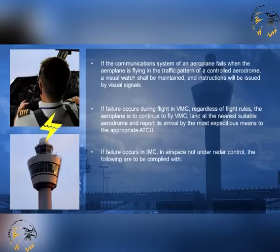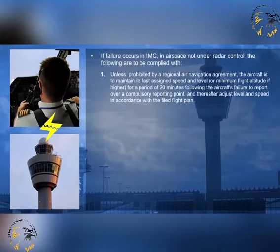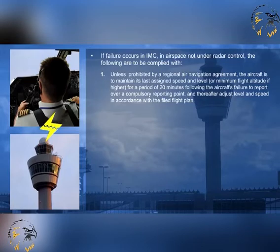If failure occurs in IMC and the airspace is not under radar control but is controlled procedurally, the following are to be complied with. 1. Unless prohibited by a regional air navigation agreement, the aircraft is to maintain its last assigned speed and level, or minimum flight altitude if higher, for a period of 20 minutes following the aircraft's failure to report over a compulsory reporting point, and thereafter adjust level and speed in accordance with the filed flight plan.